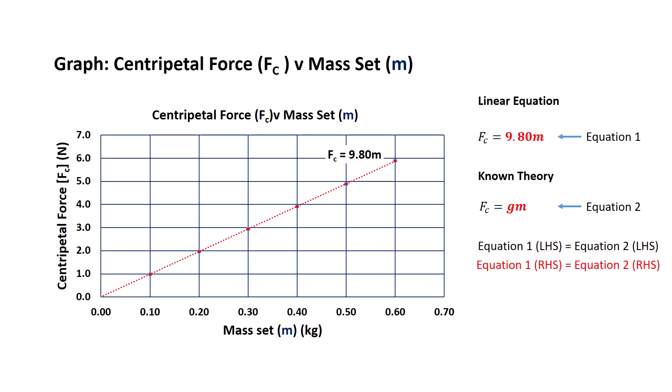mathematically the right hand sides of both equations must be equal, and we can state that as 9.80 times m is equal to g times m. We can now divide both sides by the variable of m, the mass set, and that leaves me with the equation 9.80 equals g.